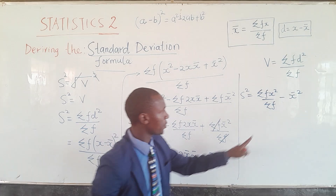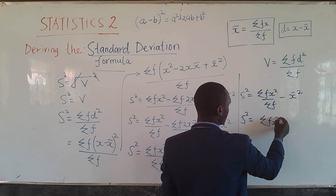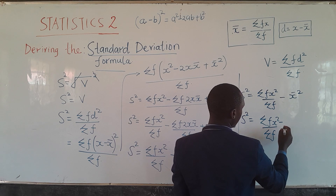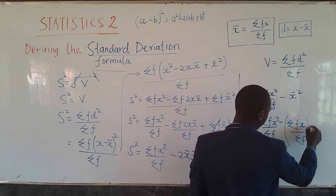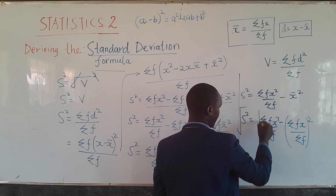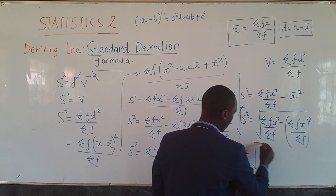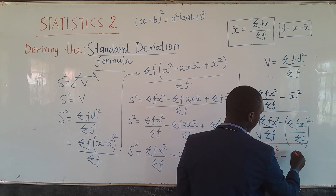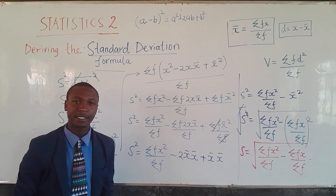The remaining step is to replace x-bar with its formula. So s² equals summation of fx²/Σf minus (summation of fx divided by summation of f)². Taking the square root of both sides to remove the square, the standard deviation formula is: s equals the square root of (summation of fx²/Σf minus (summation of fx/Σf)²). That is the formula for finding the standard deviation of a given data.